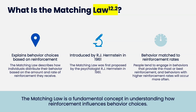We use this to explain why someone might engage in this behavior rather than that behavior. This can explain behavioral choices, and it also can help us choose interventions. The matching law describes how individuals distribute their behavior based on the amount and rate of reinforcement they receive. This was introduced in 1961 by Herrnstein, the psychologist. Behaviors matched to higher reinforcement rates will occur more often — something on a fixed ratio 1 will be engaged in more than something on a fixed ratio 5.